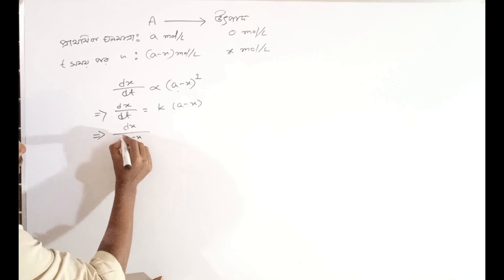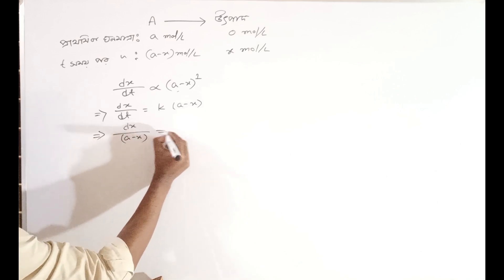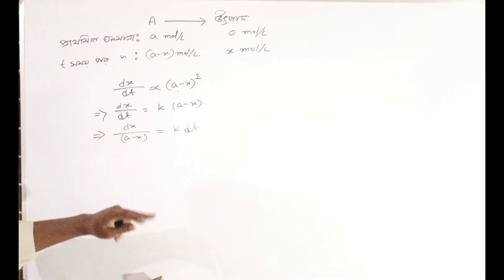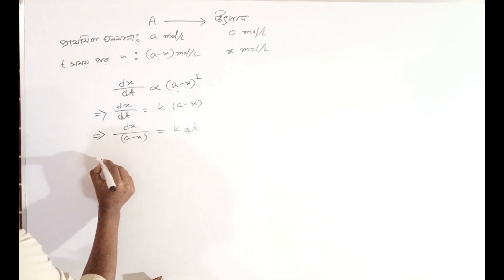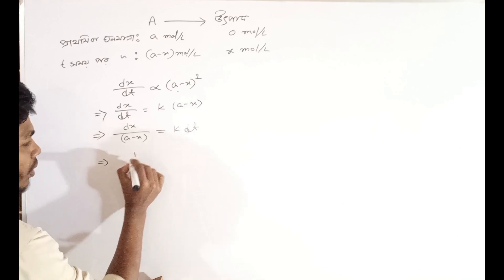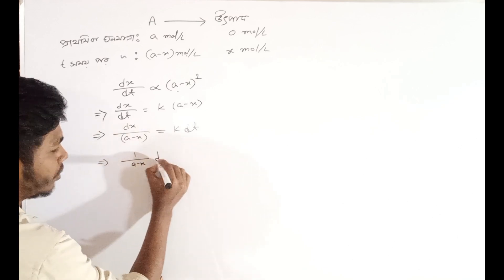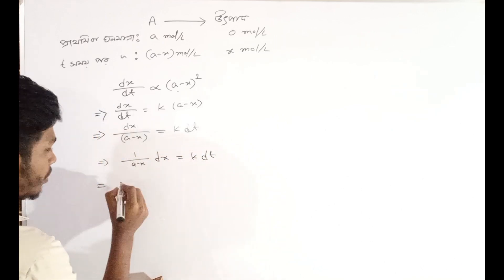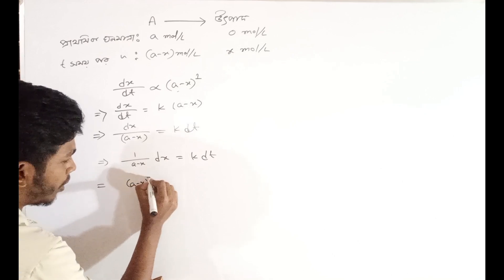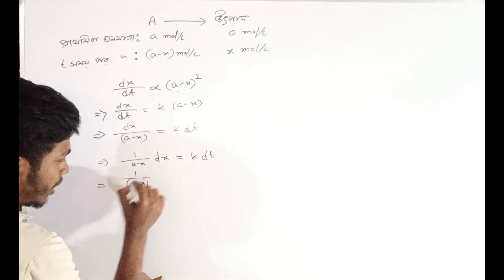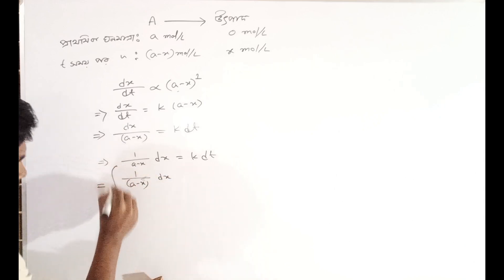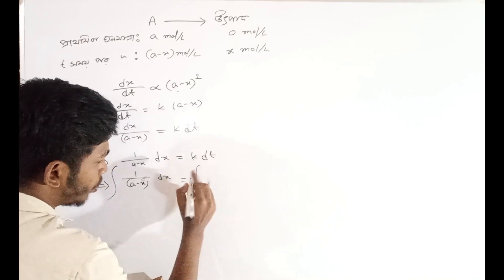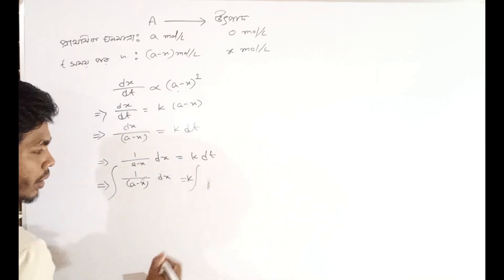So dx, separating variables, we approach (a minus x). We came to the side of (a minus x). On the other side, rearranging: we write it as 1/(a minus x) dx equals k dt. We can also write (a minus x)^(-1) dx. We integrate both sides.